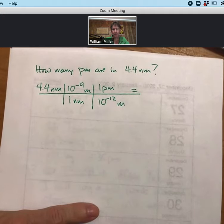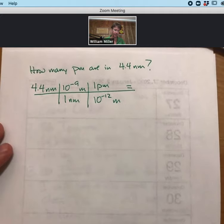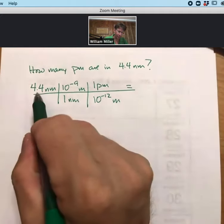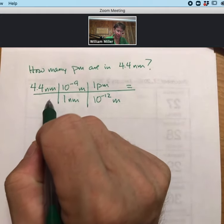Our question is, how many picometers are in 4.4 nanometers? And I've got a nice setup here. I've got my 4.4 nanometers. That's my starting point for solving this problem for the unit conversion.